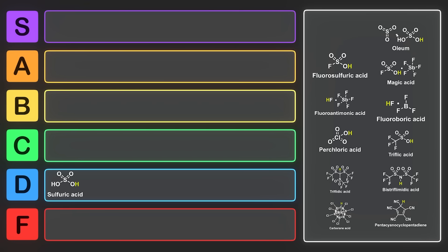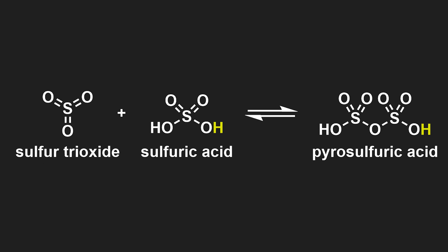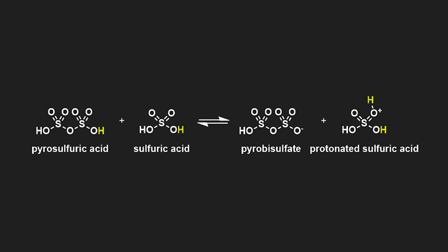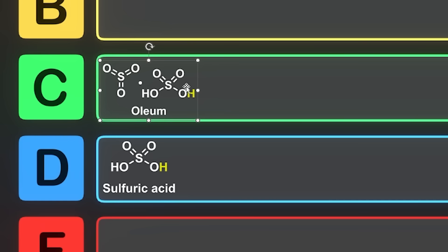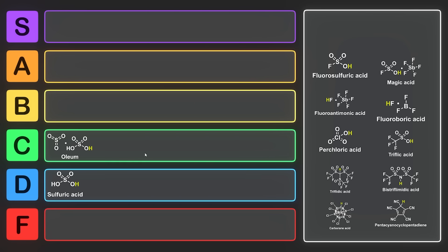Because the oleum forms a complex between the sulfuric acid and the sulfur trioxide, forming pyrosulfuric acid, this becomes such a strong acid that it can even protonate sulfuric acid. So oleum is clearly a better superacid than sulfuric acid. It can catalyze all sorts of interesting reactions, but it fumes and it's pretty scary to work with. So oleum's pretty decent. I think we can put it into C tier. It's definitely better than sulfuric acid, but there's some other ones on here that are going to be ranked higher.